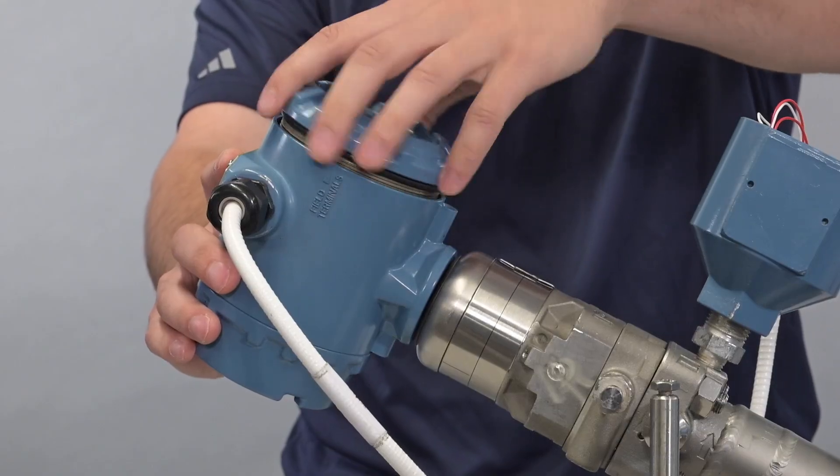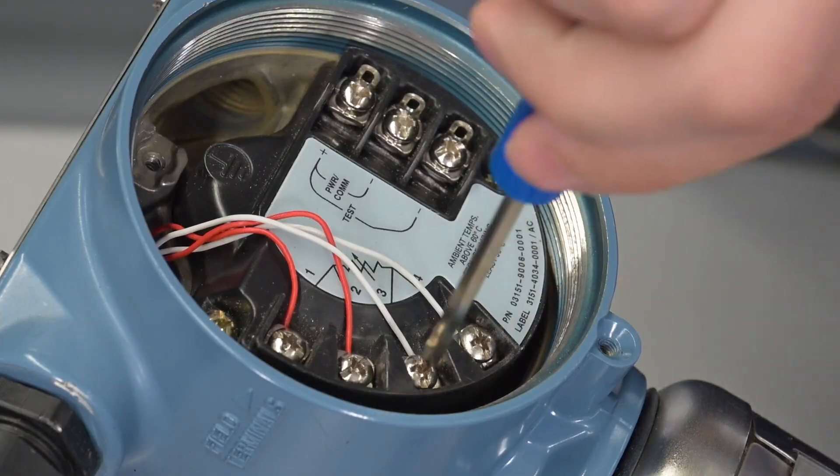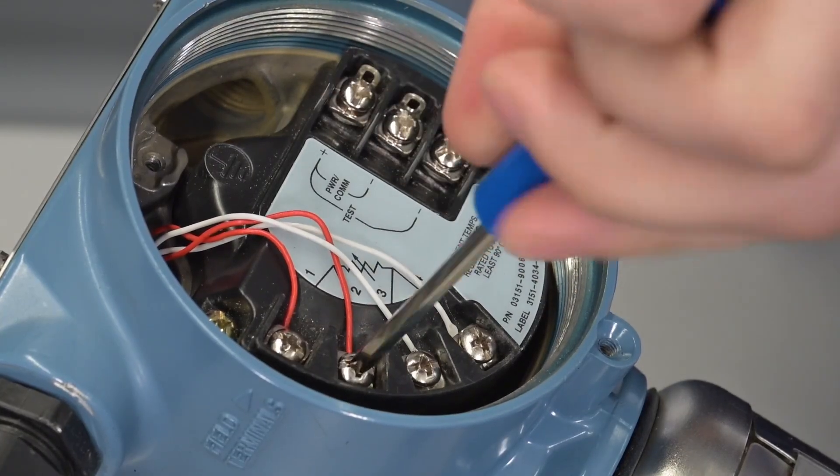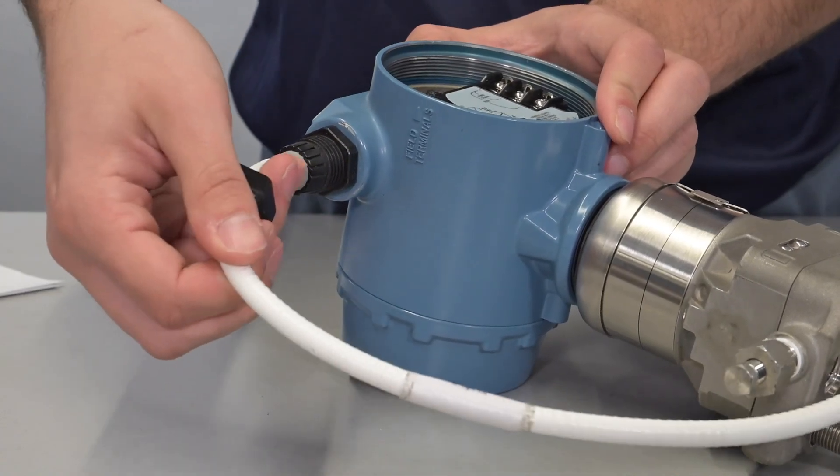Remove the temperature housing from the transmitter head to access the wiring terminal. Remove the wires to the RTD in terminals 1-4 by unscrewing the plastic cap from the compression fitting to pull the cable outwards.